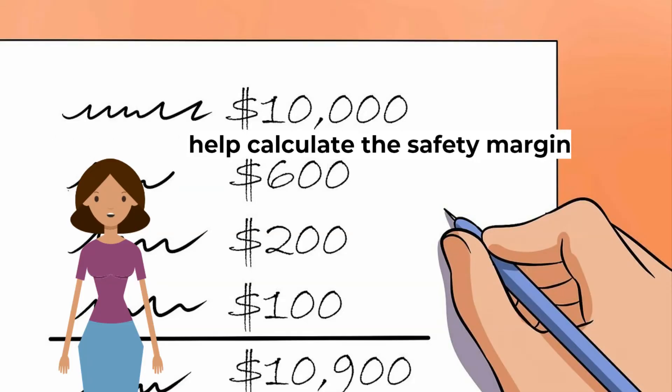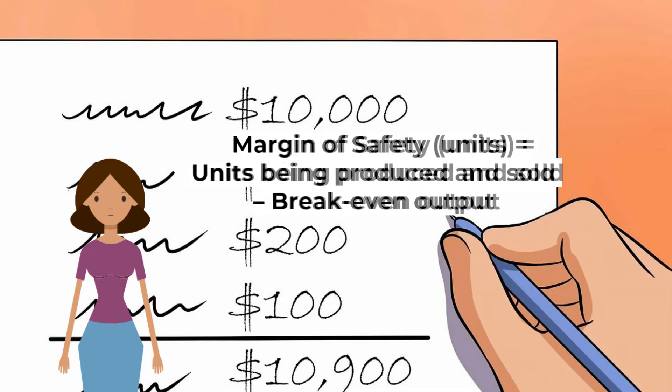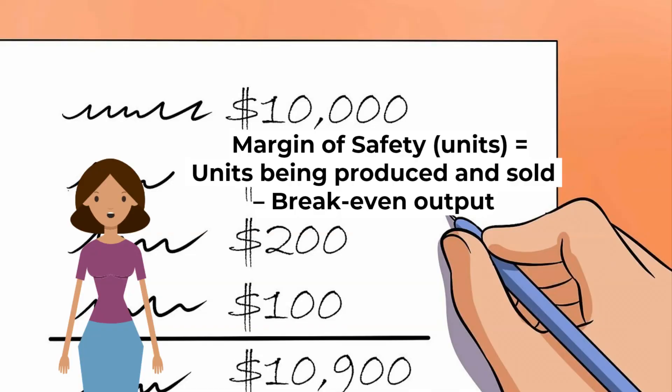The breakeven chart can also help calculate the safety margin, the amount by which sales exceed the breakeven point. In the worked example, if the business decided to sell 2000 units, their margin of safety would be 1000 units. In sales terms, the margin of safety would be 1000 multiplied by 8, or 8000. They are 8000 safe from making a loss. The margin of safety in units equals units being produced and sold minus breakeven output.